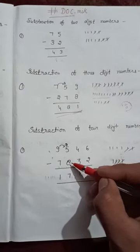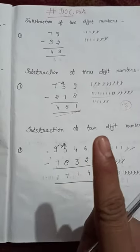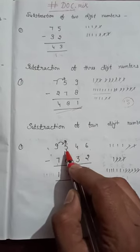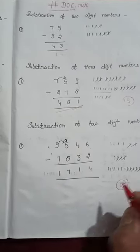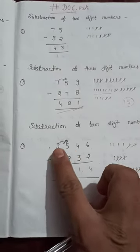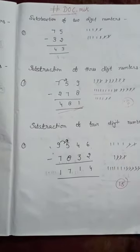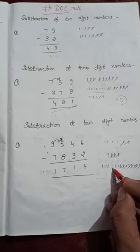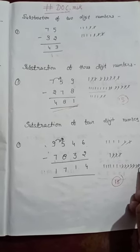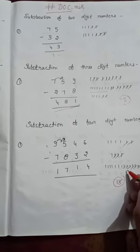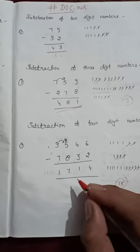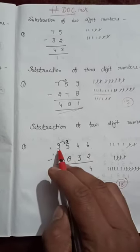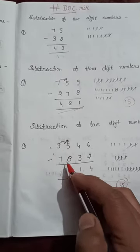Now the next digit: 5 minus 8. You all know that we cannot subtract 8 from 5. So what do we do? We carry 1 from 9. So now the number here is 15. When we carry 1 from 9, the number is 15. Now 15 minus 8 equals 7 — counting: 1, 2, 3, 4, 5, 6, 7, 8 then remaining 1, 2, 3, 4, 5, 6, 7. When we carry 1 from 9, the remaining number is 8. Now 8 minus 7 equals 1.